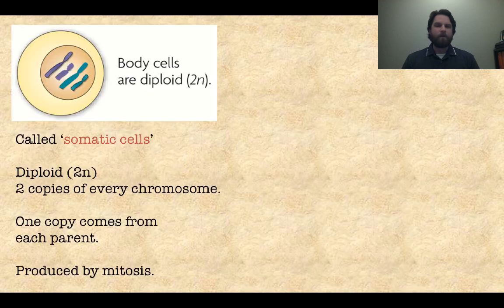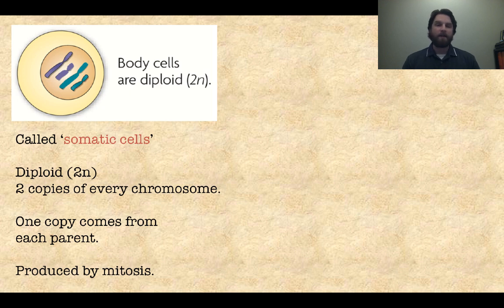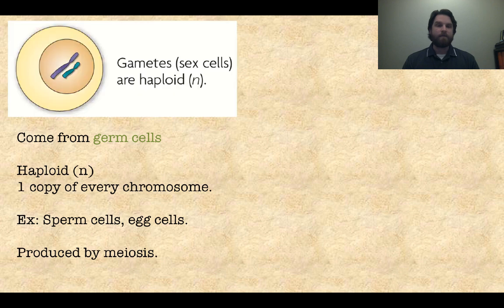If we look at these cells individually, we can see that body cells are what we call diploid. That means they have two copies of every chromosome. We sometimes refer to that as 2N — they have two copies of the N number of chromosomes in whatever organism you're talking about. They're also called somatic cells. One copy of each chromosome comes from each parent, and they are produced by mitosis. So when you need to make more body cells, you go through mitosis to get new daughter cells.